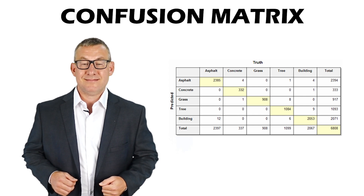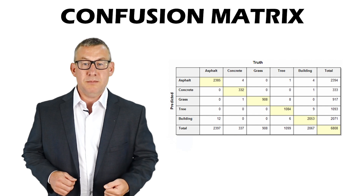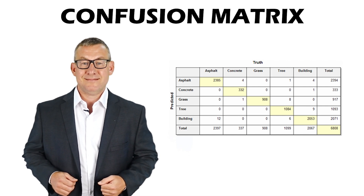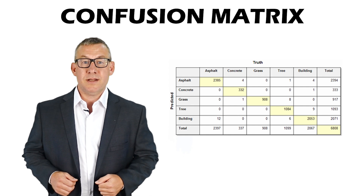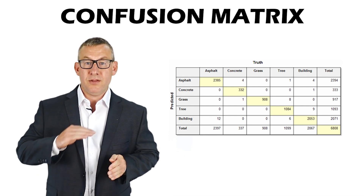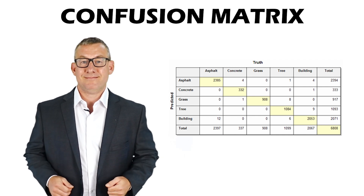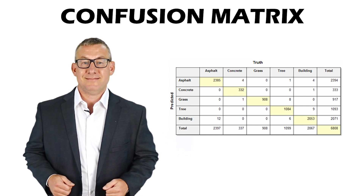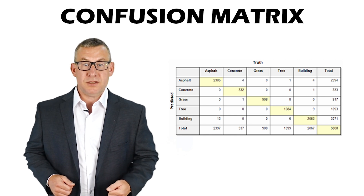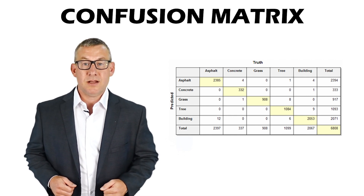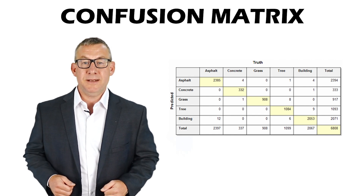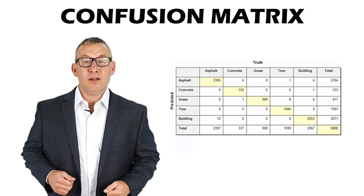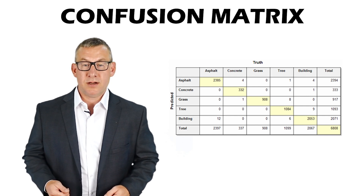A Confusion Matrix assesses the accuracy of an image classification based on additional ground truths. Classifications are listed on one axis and true values on the other axis in the same order. Correctly classified features intersect on the diagonal axis. A Confusion Matrix can be used to produce a Kappa Index of Agreement, where 1 equals 100% accuracy and 0 equals 0% accuracy. A Confusion Matrix is also known as an Error Matrix or Error Table.